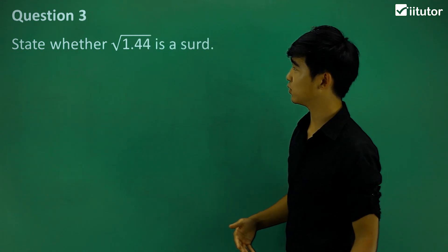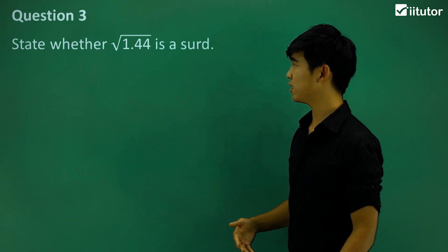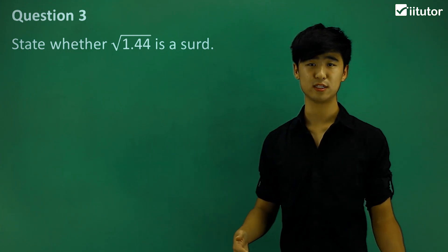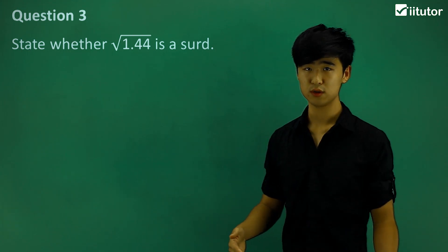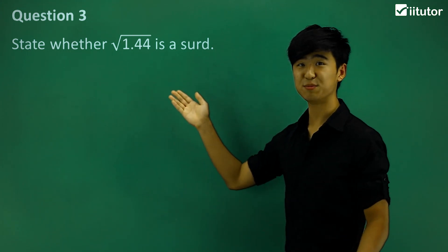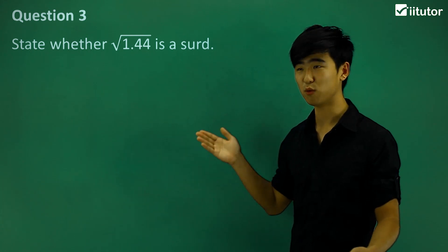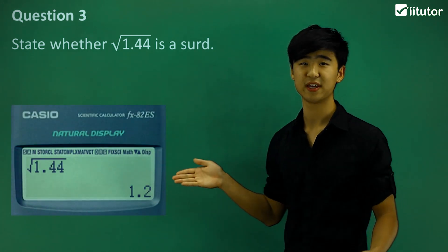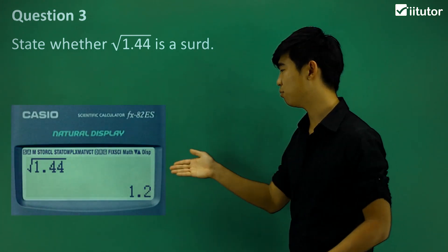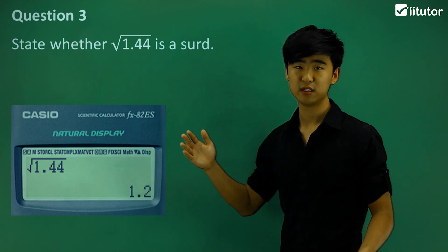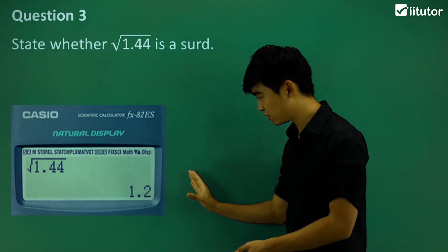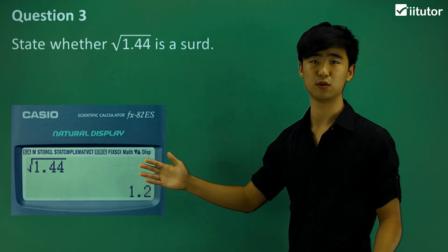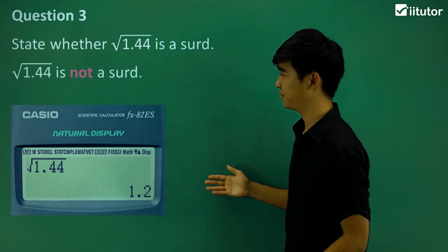Let's have a look at the next question: state whether the square root of 1.44 is a third. Now it does seem like it's not going to come out nicely, but we'll just put it into our calculator. We actually just get 1.2. So again, it's not even endless — it's just some finite number, so this one is not a third.